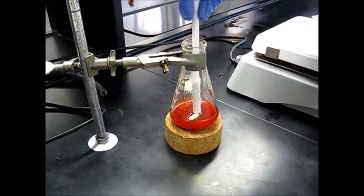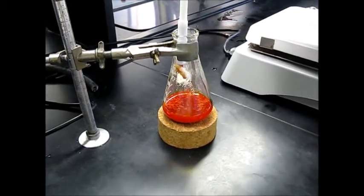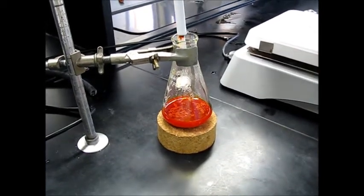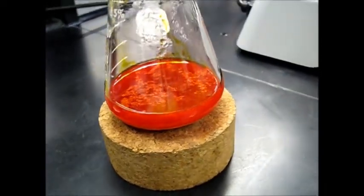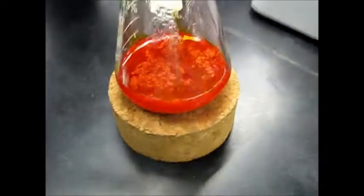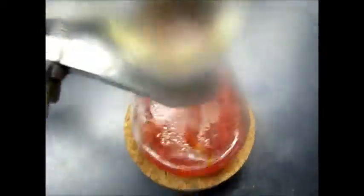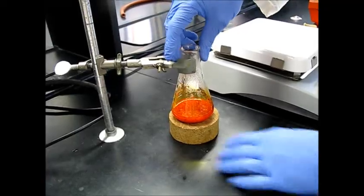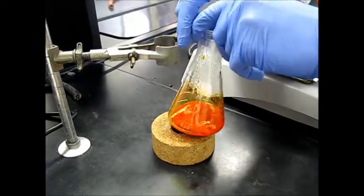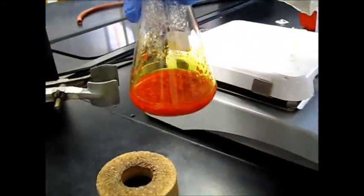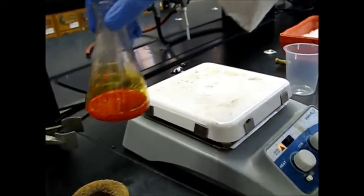So we lowered it down to the cork ring just so it wasn't hanging in the air. We're going to go ahead and take out our stir bar. There's not too much product on it, so we can go ahead and just set this off to the side. We'll let it cool down to room temperature and then put it in an ice bath. So we're going to go ahead and move it to the ice. You can see we're already getting solid crystals to precipitate. So we'll set it in the ice for about maybe 10 minutes and we should get quite a few crystals.